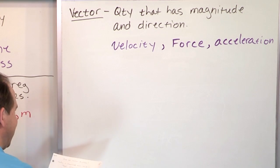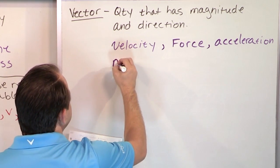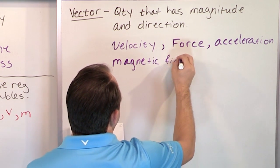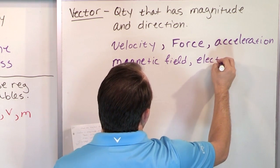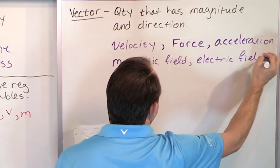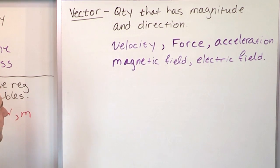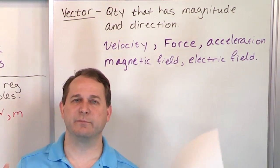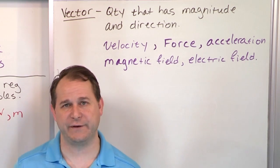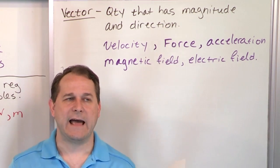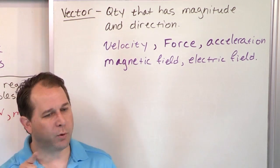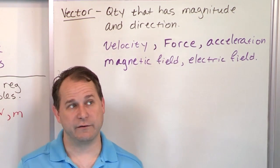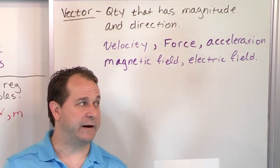We'll also list some quantities we'll get to much later: magnetic field and electric field. You've all seen magnets interact with each other. There's an invisible field called a magnetic field, and that field is a vector field — every point in space around the magnet has both a strength and a direction. The field lines that we can't see but know are there are called vectors. Those are vector quantities at every point.